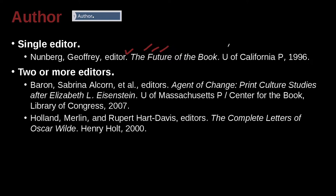Where is it from? It's from University of California Press — 'P' meaning Press, which is a normal abbreviation that MLA guidelines tell us to use — comma space 1996, 1996 being the year of publication for that book.